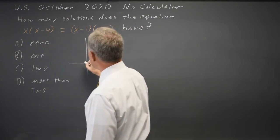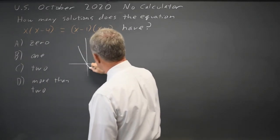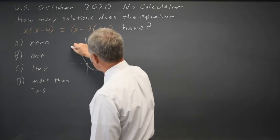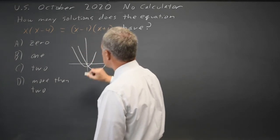The one on the left has zeros at 0 and positive 4. The one on the right has zeros at negative 1 and positive 1. There should be one solution.